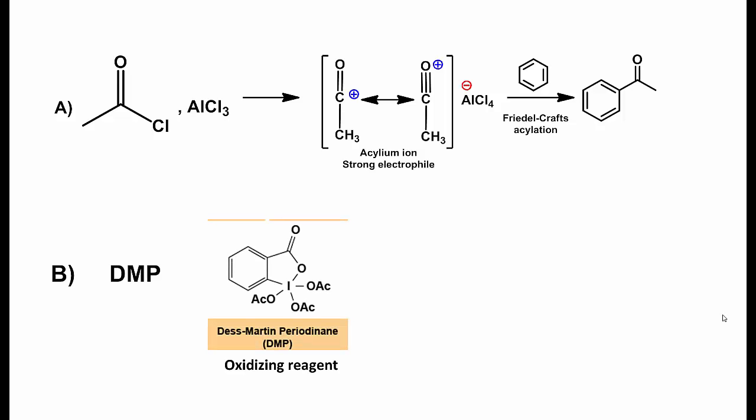Reagent B is DMP, which is an acronym for Dess-Martin periodinane and is an oxidizing reagent that oxidizes alcohols to aldehydes and ketones.